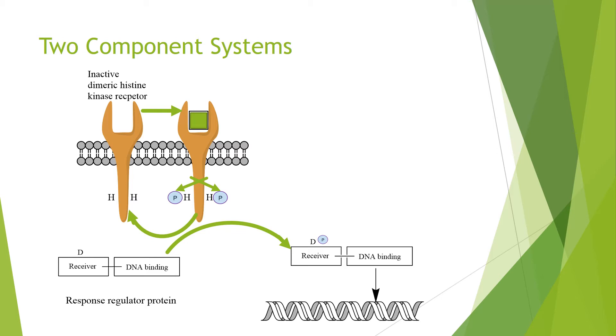Often this is coupled to a functional response. In this case, the receiver domain is next to a DNA binding domain, and the transfer of the phosphate activates the DNA binding domain to allow it to bind DNA.